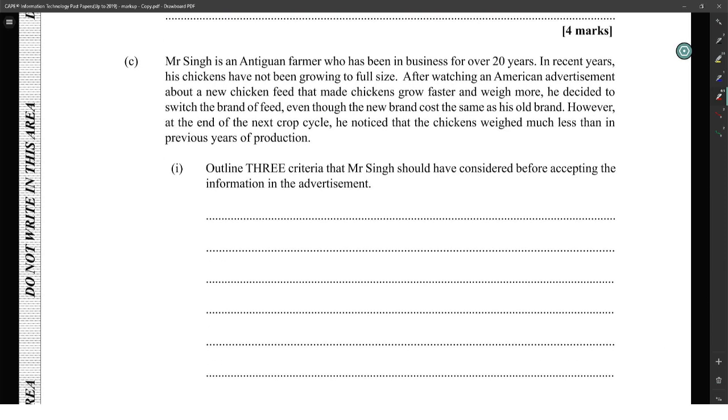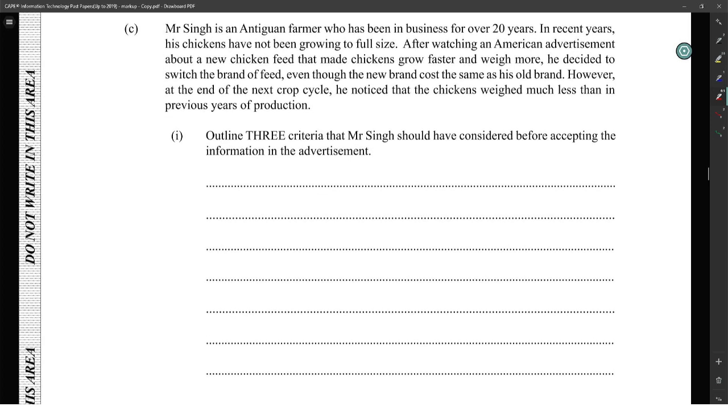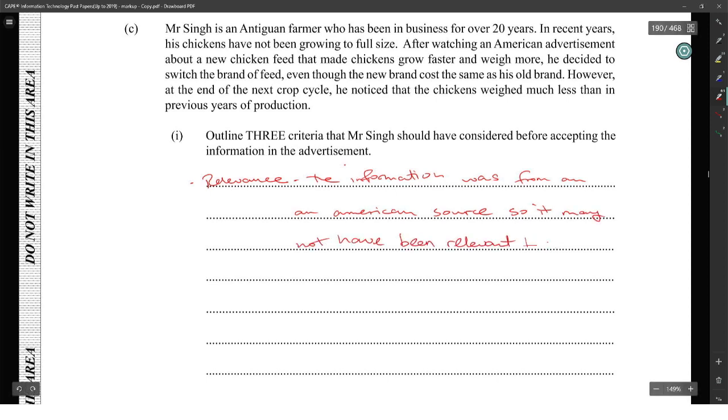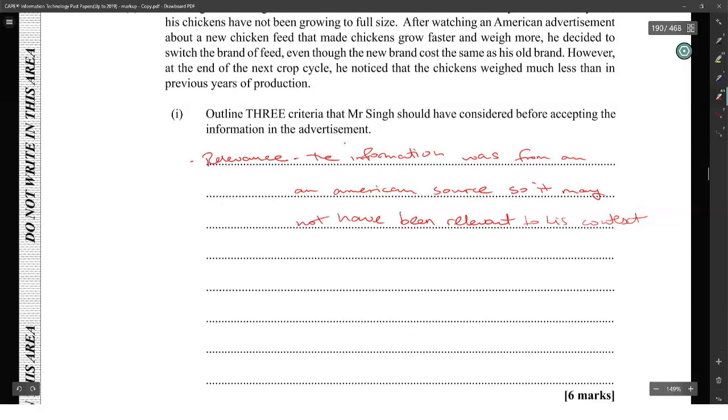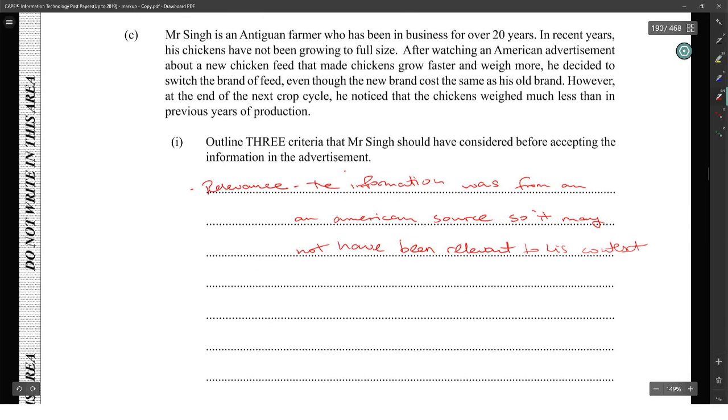Outline three criteria Mr. Singh should have considered before accepting the information in the advertisement. We should go for relevance - the information was from an American perspective, from an American source, so it may not have been relevant to his context.